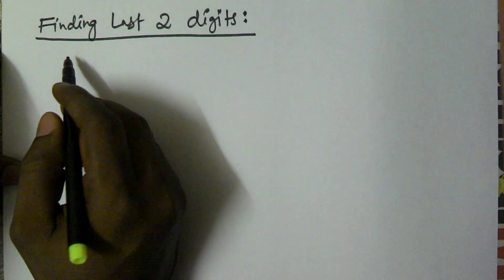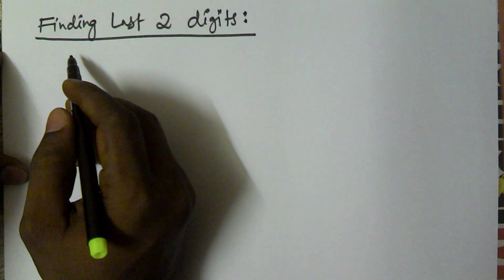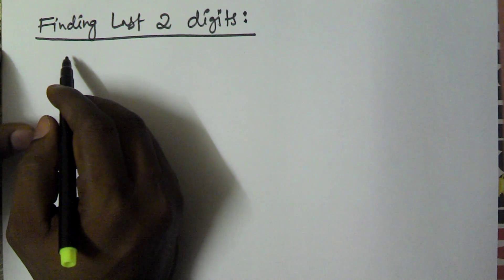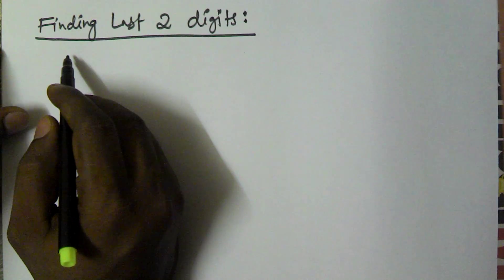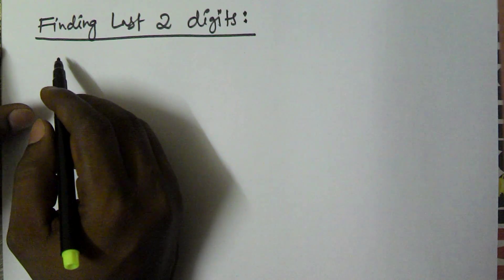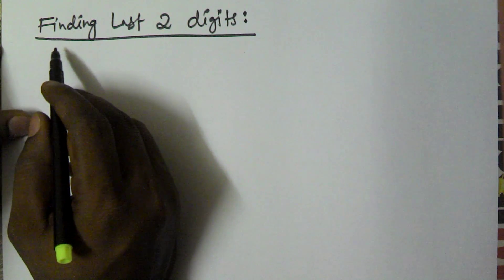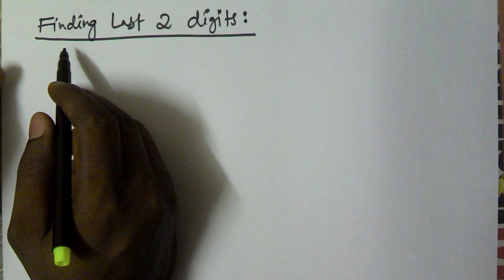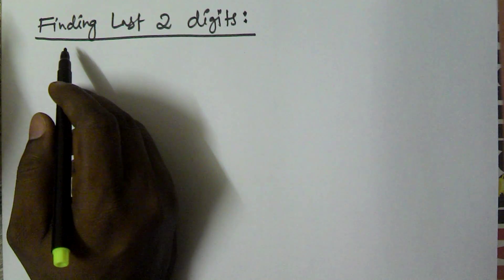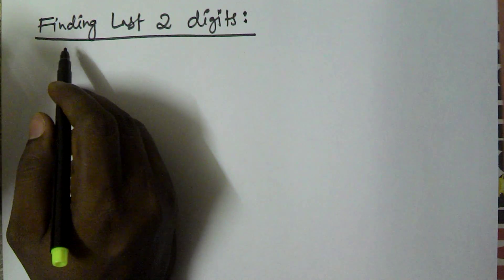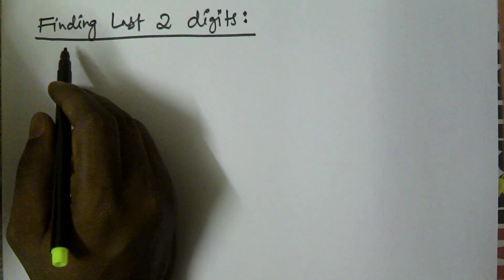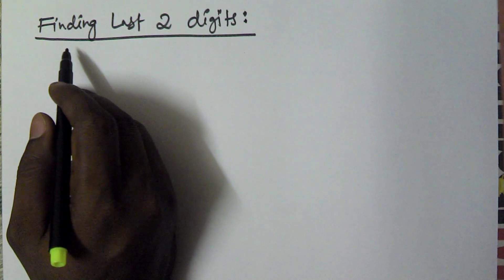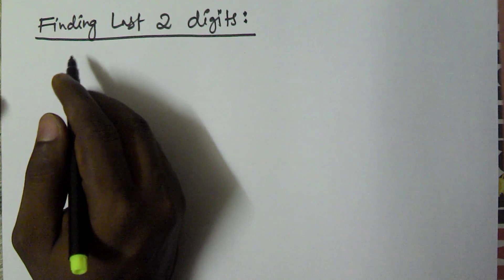Hello friends. In this video I am going to explain the logic behind finding the last two digits of a given multiplication in which each number is going to end with 5.